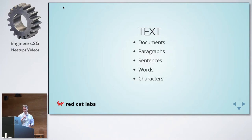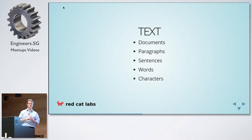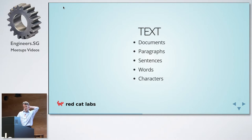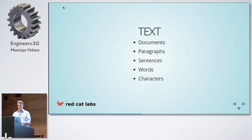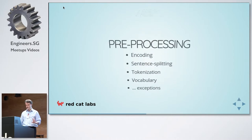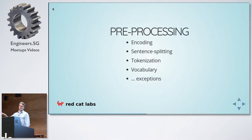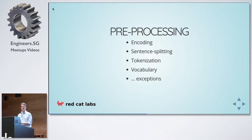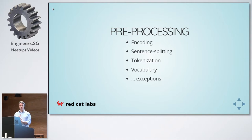Text is very intuitive to everyone, and that's kind of one of its AI problems — it's not so obvious what's going on. For text you've got documents, paragraphs, sentences, words, and characters. In order to feed this into a neural network, you've got to pre-process it: encode it, sentence split it, tokenize it, and think about your vocabulary and what to do when there are exceptions.